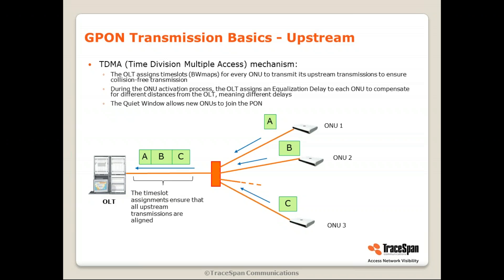Now let's talk about the upstream. In the upstream, the challenge is different. Different ONUs all transmit on the same shared media, and someone needs to control them to ensure each one gets its time slots without collision. This is exactly TDMA — Time Division Multiple Access — which means the OLT controls the timing so every ONU transmits in a different time slot. The OLT assigns time slots via BWMAP for every ONU to transmit its upstream transmissions, ensuring collision-free transmission.